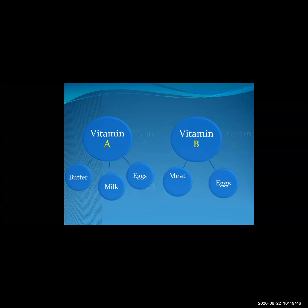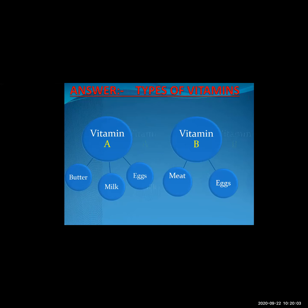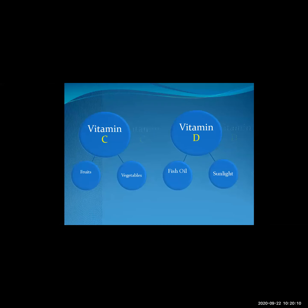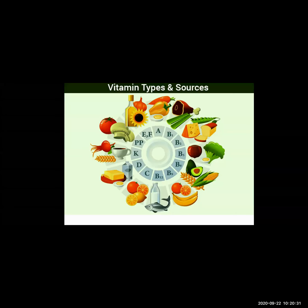We got Vitamin A from butter, milk, and eggs. Vitamin B from meat and eggs. We convert that passage into a tree diagram like this. The title of this figure is 'Types of Vitamins.' Vitamin C is from fruits and vegetables. Vitamin D is from fish oil and sunlight. There is a chart showing vitamin types and their sources.